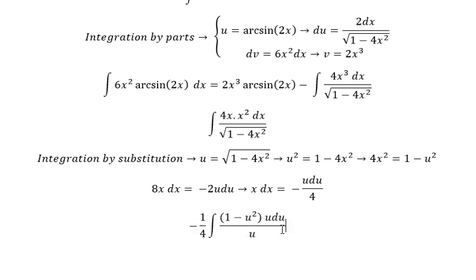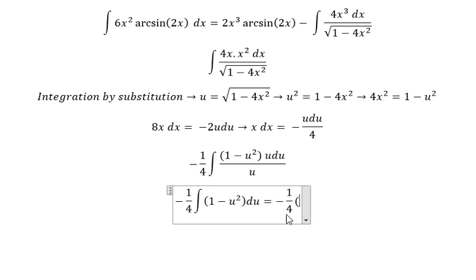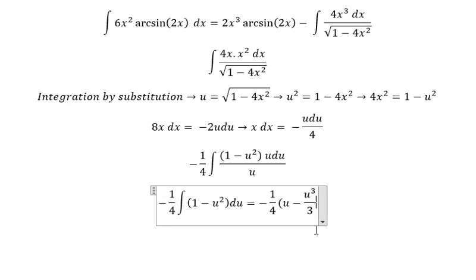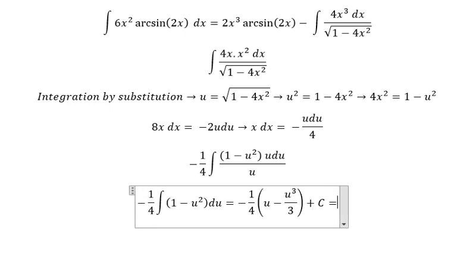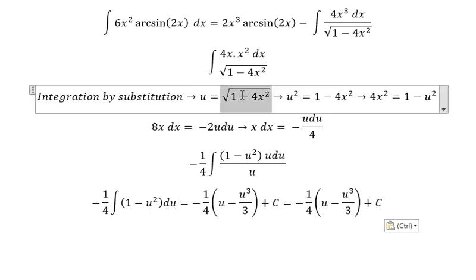Next we simplify by canceling u. We integrate to get negative 1 over 4 times (1 minus u squared) du, which gives us negative 1 over 4 times (u minus u cubed over 3). Now we change u back to the square root of 1 minus 4x squared.